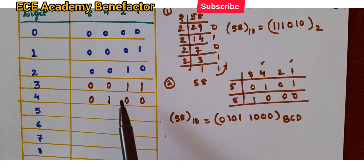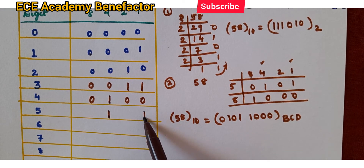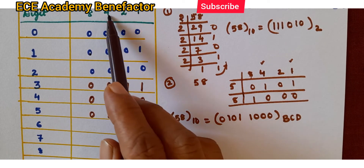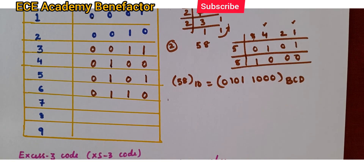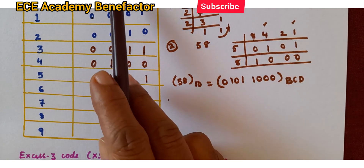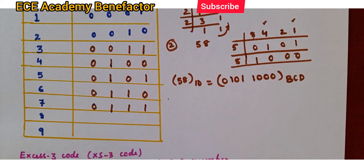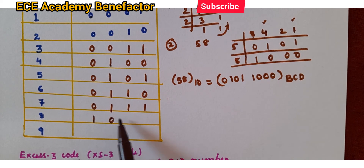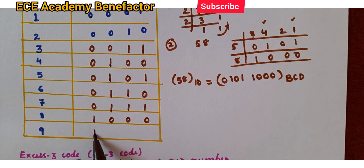For 5, we get it as 4 plus 1 equals 5, so at 4-position 1 and at 1-position 1, and at 8 and 2 we put 0. For 6, 4 plus 2 equals 6, so 4 and 2 positions are 1 and other digit positions are 0. For 7, 4 plus 2 plus 1 equals 7, so those 3 digit positions are 1 and the 8-position is 0. For 8, only the 8-position is 1 and others are 0. For 9, 8 plus 1 equals 9, so the 8-position is 1 and the 1-position is 1, and 4 and 2 are 0.